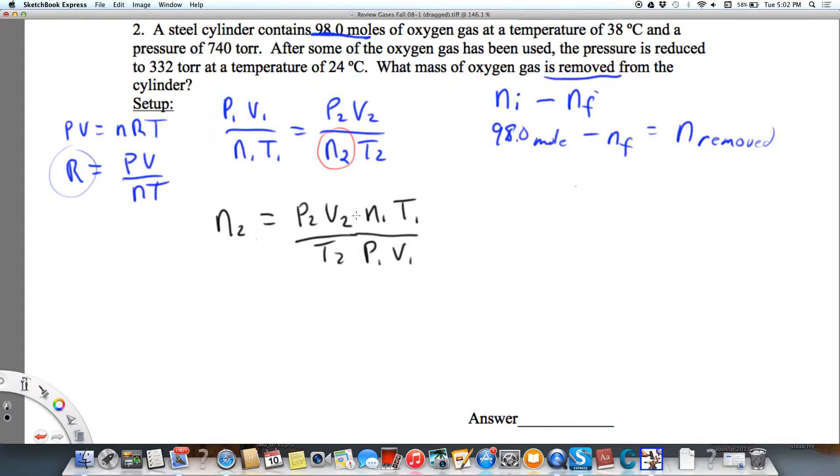with temperature, I need to change to Kelvin because temperature in Celsius is not proportional. So T1 is 38 degrees Celsius plus 273, which equals 311 Kelvin. And T2 is 24 degrees Celsius plus 273, which equals 297 Kelvin.